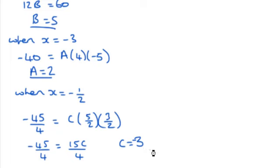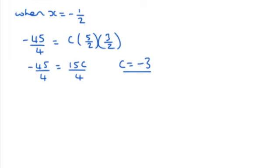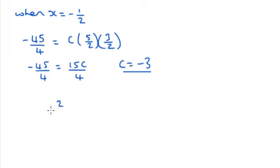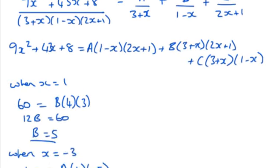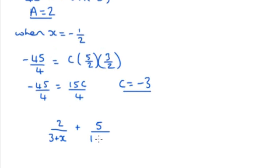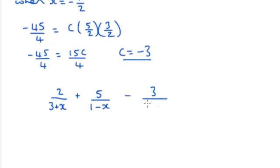Just write that a little bit better. So we've got our A, our B, and our C value, and so don't forget to write the final answer. We're going to have 2 for A, so that was over 3 + x. We are going to have 5 for B, and that was over 1 - x. And -3 for the last one, which was over 2x + 1.